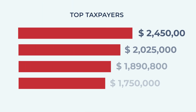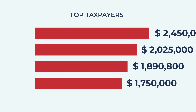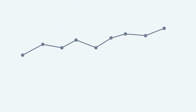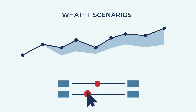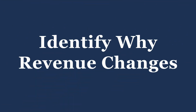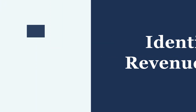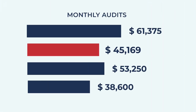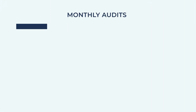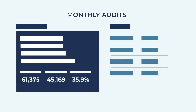Discover who your top tax revenue producers are, how much they are contributing, and what would happen if that changed. Clearview lets you pinpoint economic changes to your cash for any given month, identify trends, and one-time payments from every source.